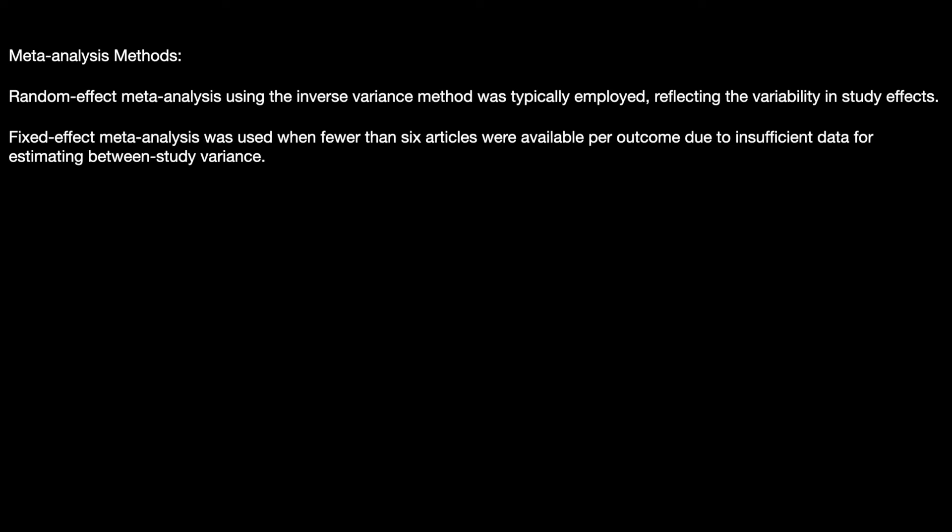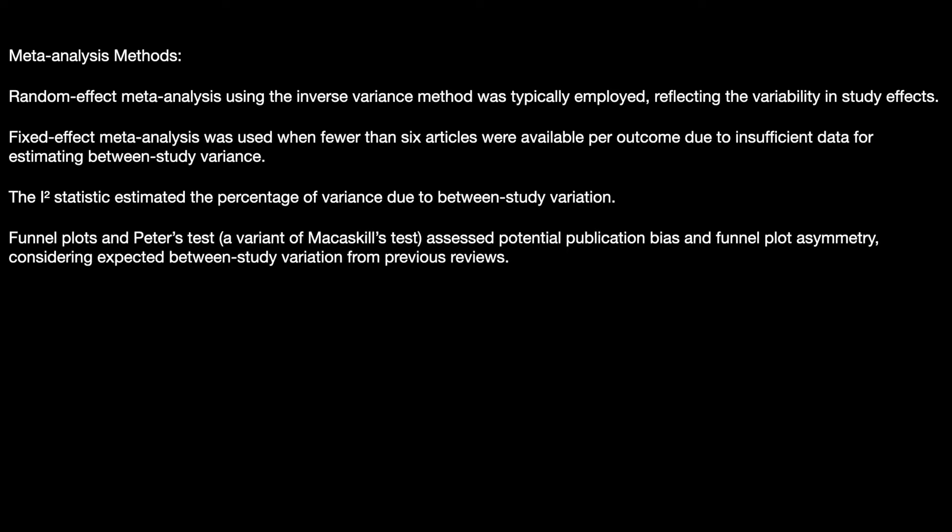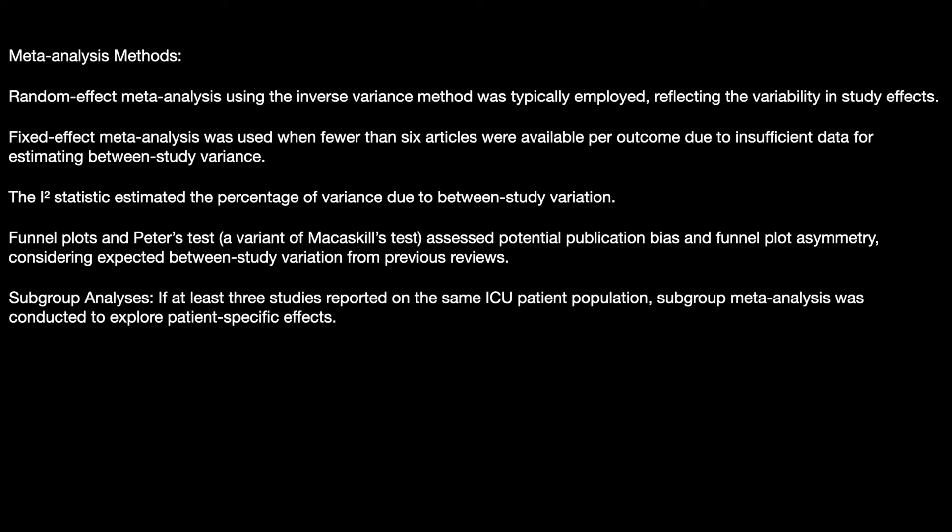Fixed effect meta-analysis was used when fewer than six articles were available per outcome due to insufficient data for estimating between-study variance. The I-squared statistic estimated the percentage of variance due to between-study variation. Funnel plots and Peters test, a variant of the Macaskill test, assessed potential publication bias and funnel plot asymmetry.